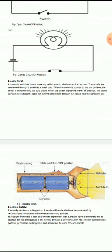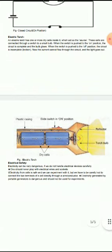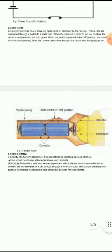position, the circuit is incomplete. Now the current cannot flow through the circuit and the light goes out. The following figure explains the electric torch. Electrical safety: electricity can be very dangerous if we do not handle electrical devices